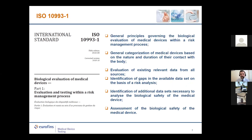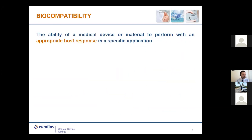The ISO approach has evolved from the first edition of 1992 — 'Guidance on Selection of Tests' — to the fifth, current edition: 'Evaluation and Testing within a Risk Management Process.' ISO 10993-1 specifies the general principles governing biological evaluation of medical devices within a risk management process: the general categorization of devices based on nature and duration of contact with the body; evaluation of existing relevant data from all sources; identification of gaps in the available data set; identification of additional data necessary to analyze biological safety; and finally, assessment of the biological safety of the medical device.